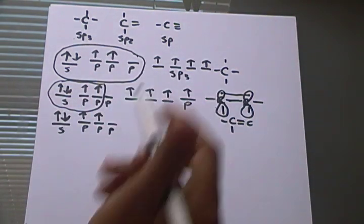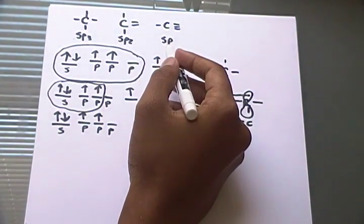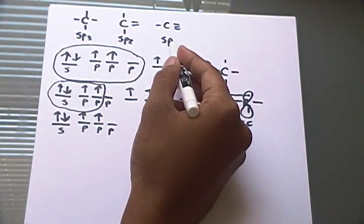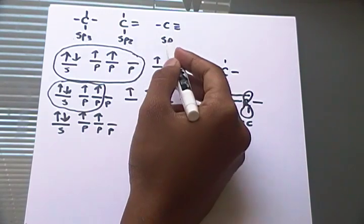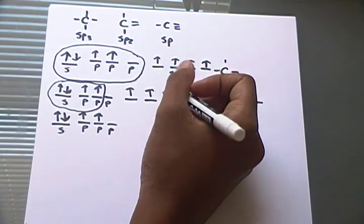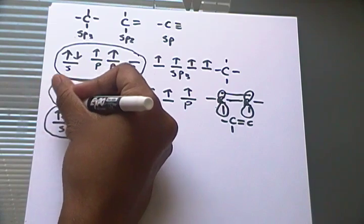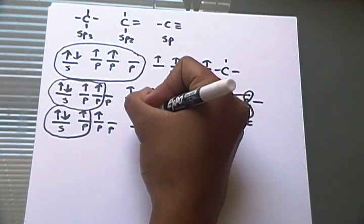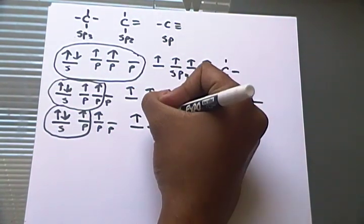Instead, this time SP, what would you think? By now you probably already know. Not two P orbitals, but just one. So this one will combine with this. You have two equivalent hybridized orbitals.